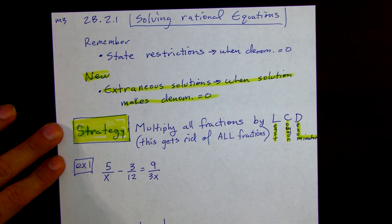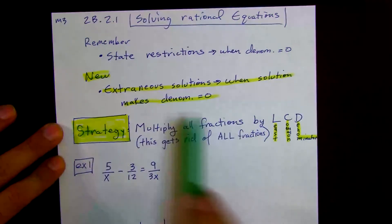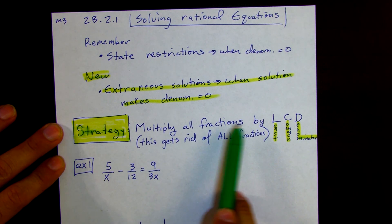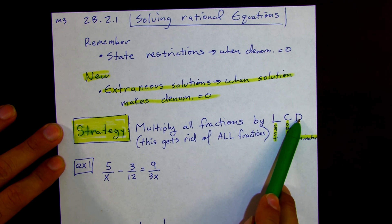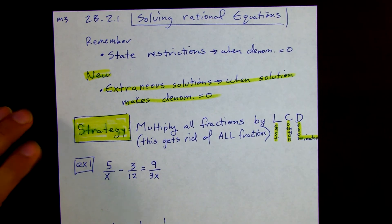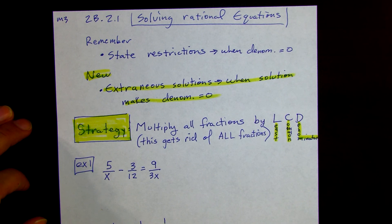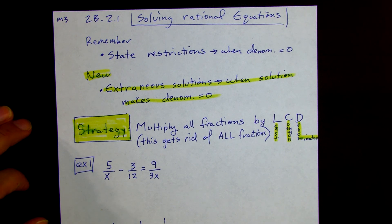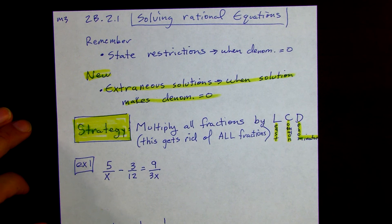Our strategy is to multiply all fractions by the least common denominator. That is going to get rid of all the fractions right off the bat, because all of our denominators will go into the least common denominator. If we multiply the top parts of the fraction by that value, it's going to cancel out all of the denominators.